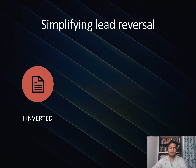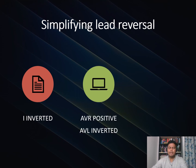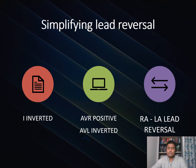To simplify the lead reversal algorithm: if lead I is inverted, that means the RA lead has probably moved away from its normal position. If AVR is then found to be positive, that confirms RA has moved away. If AVL is also inverted, that means the LA lead has also moved away from its normal position. Since both RA and LA have moved away and exchanged places, this is an LA to RA lead reversal.